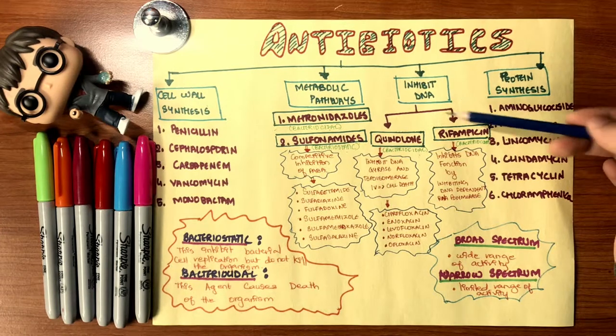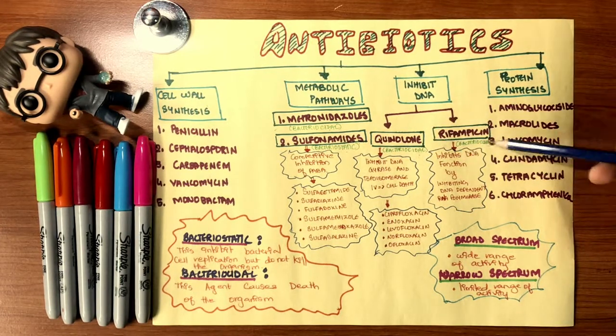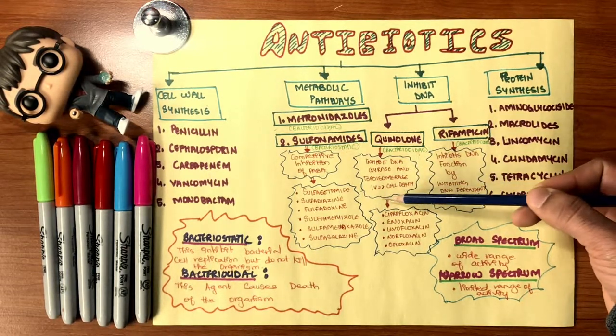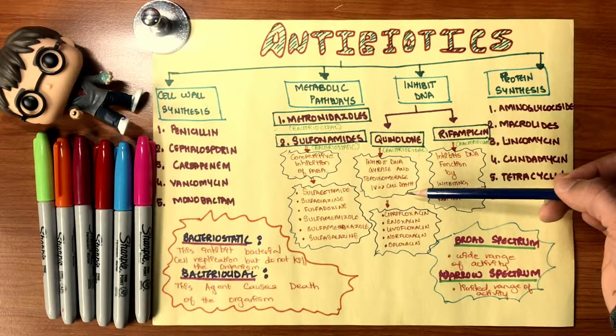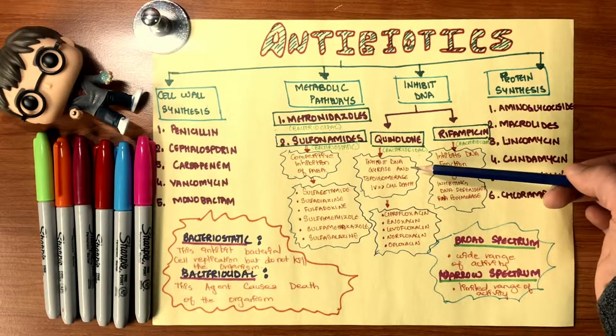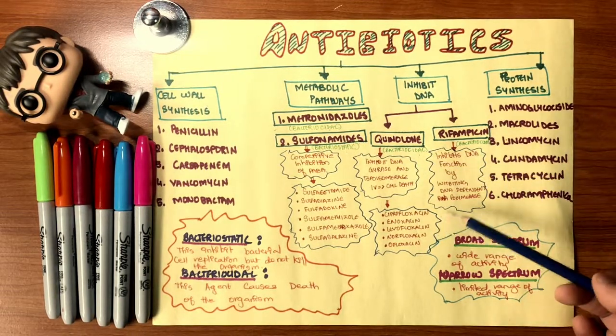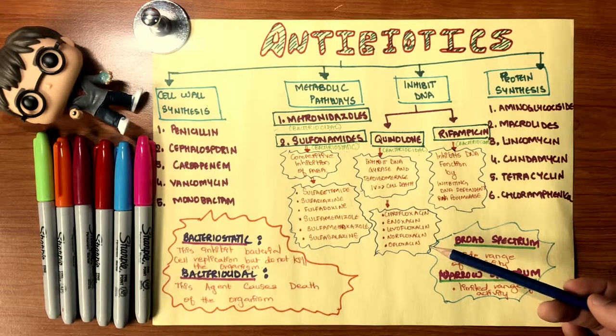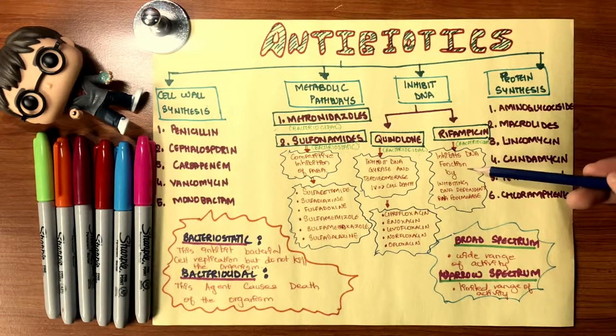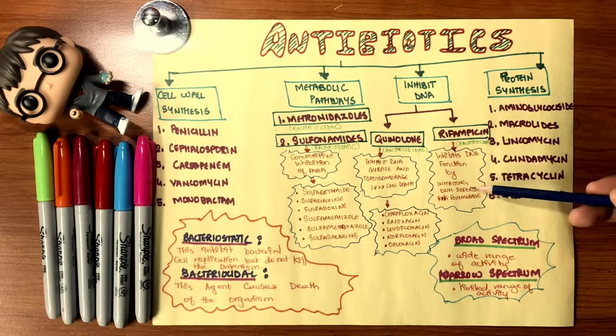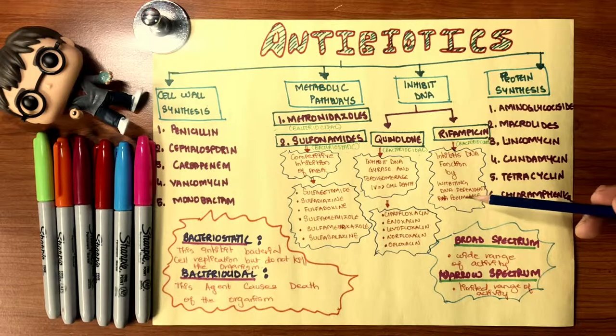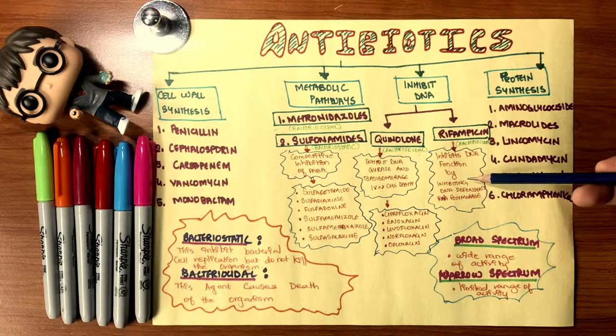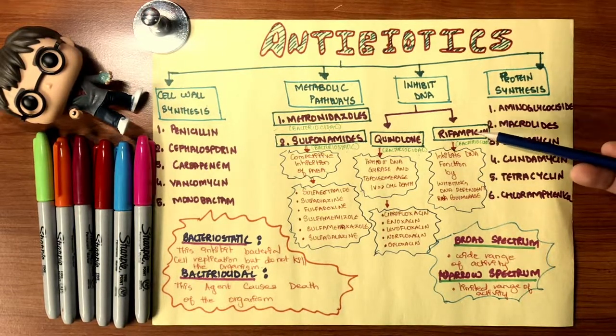Inhibition of the DNA are further divided into quinolones and rifampicin, both bacteriocidal, where quinolones will inhibit the DNA gyrase and topoisomerase number four and will cause cell death. These two are the important molecules for life and the structure and the function of a bacteria, where ciprofloxacin and levofloxacin and norfloxacin will actually kill that process, killing the cell. Rifampicin will inhibit DNA function by inhibiting the DNA-dependent RNA polymerase. This is a process done during the creation of the bacteria during its birth, where rifampicin will get into the cell and stop its function. Again, this drug is also used in anti-tuberculin therapies.